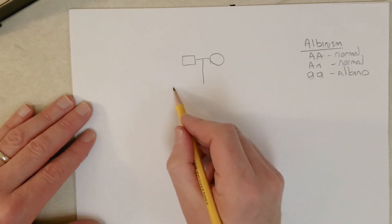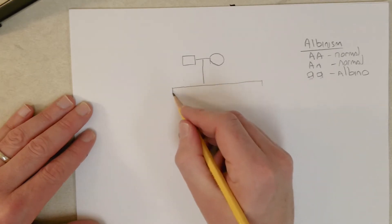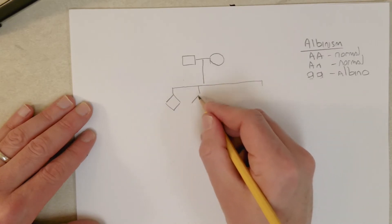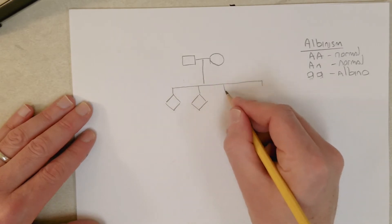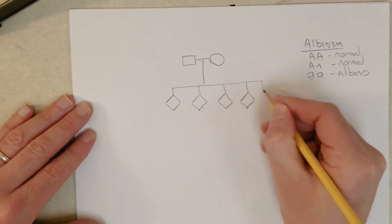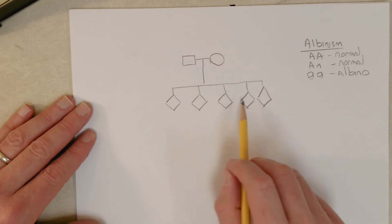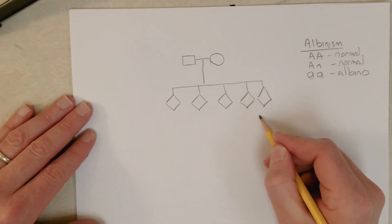Have five children, four normal and one albino. So if we don't know the sex, we can use diamonds. Now, one of these children has the albino phenotype according to the question.